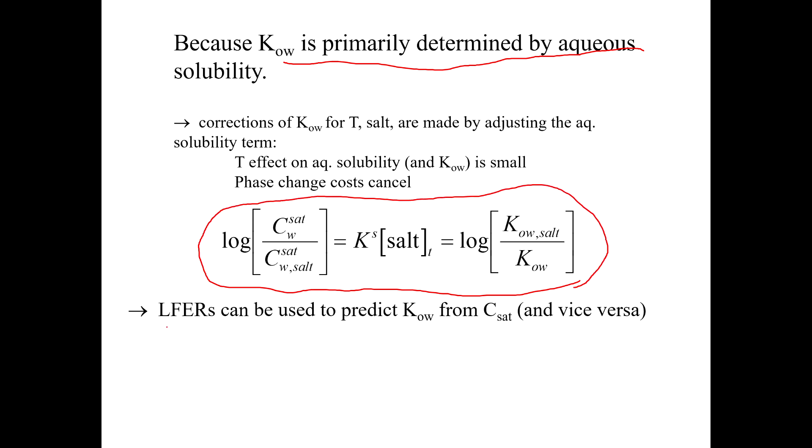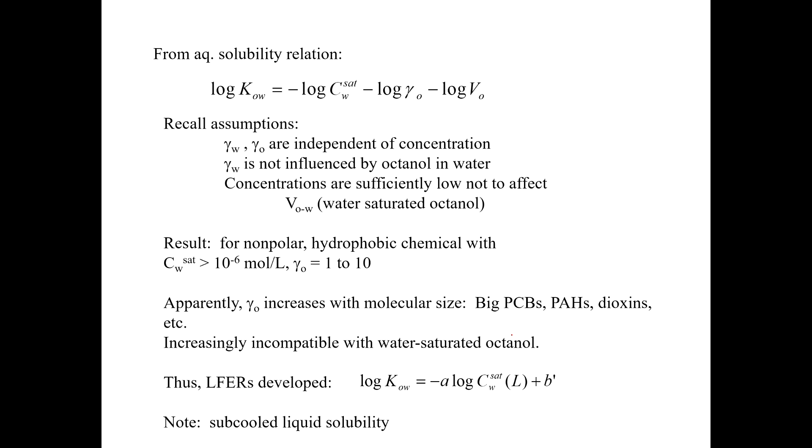And it's also why we can use linear free energy relationships to predict KOW from solubility and vice versa. And actually it's usually vice versa because it turns out KOW is fairly easy to measure, but solubility in water is surprisingly difficult. So we have equations of this form, log KOW is equal to minus log C sat minus some intercept over here. We just call this whole thing the intercept.